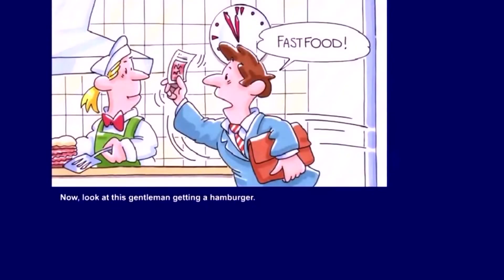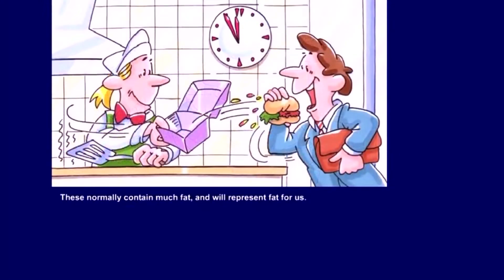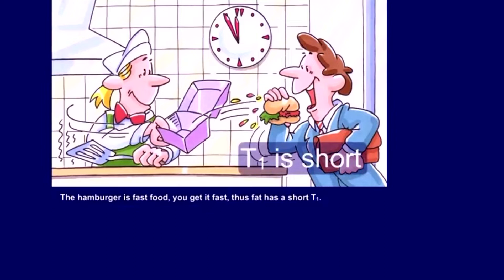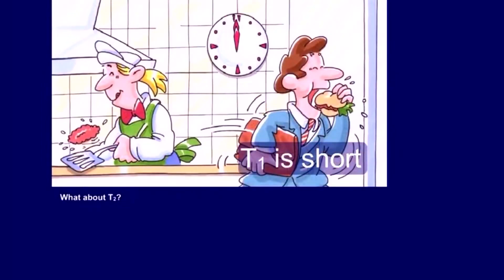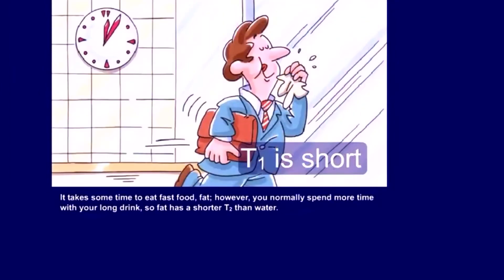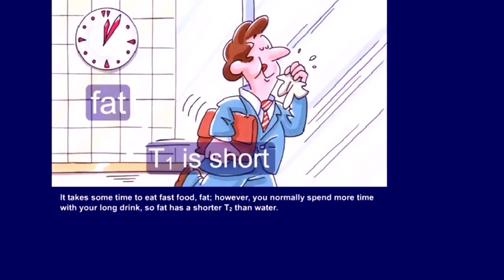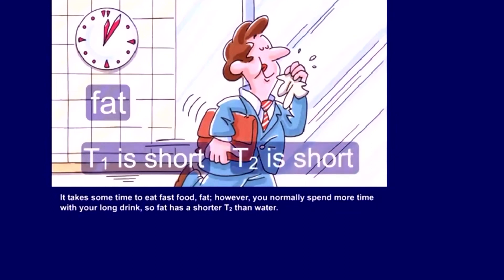Now, look at this gentleman getting a hamburger. These normally contain much fat and will represent fat for us. The hamburger is fast food — you get it fast — thus fat has a short T1. What about T2? It takes some time to eat fast food, fat. However, you normally spend more time with your long drink. So fat has a shorter T2 than water.